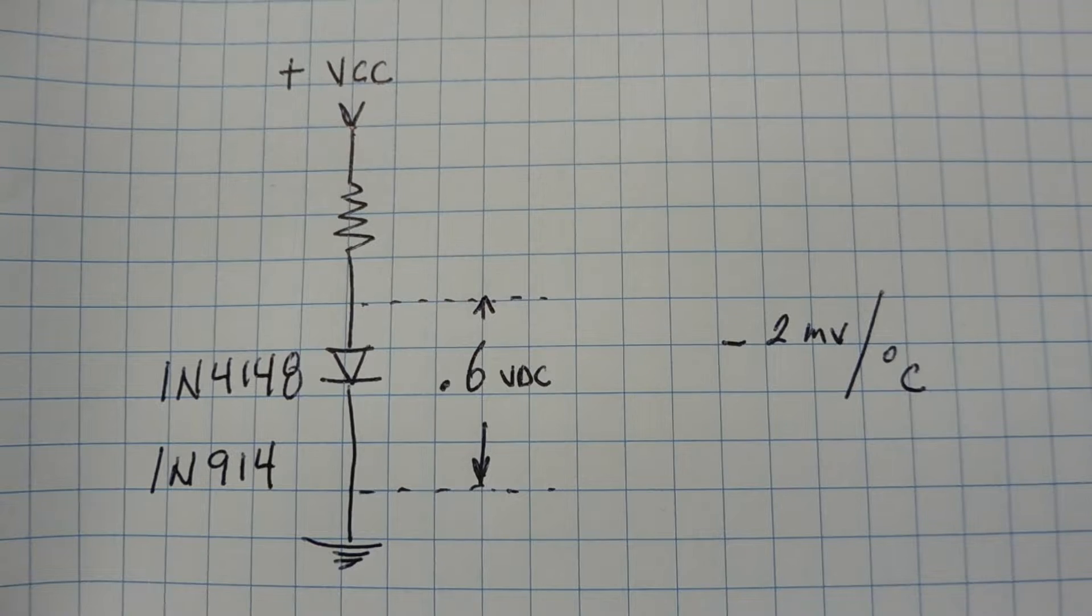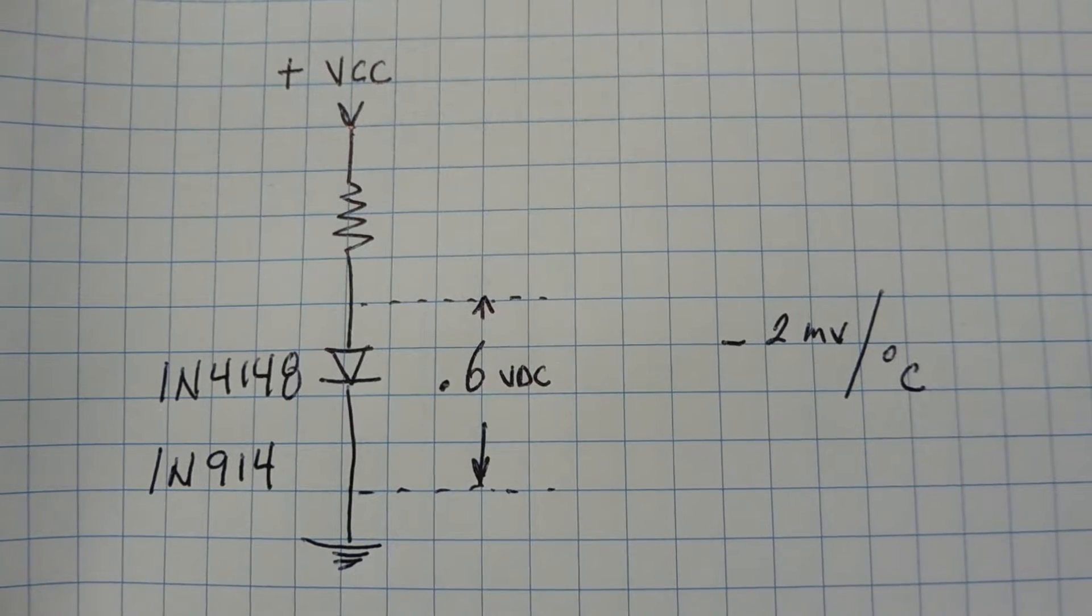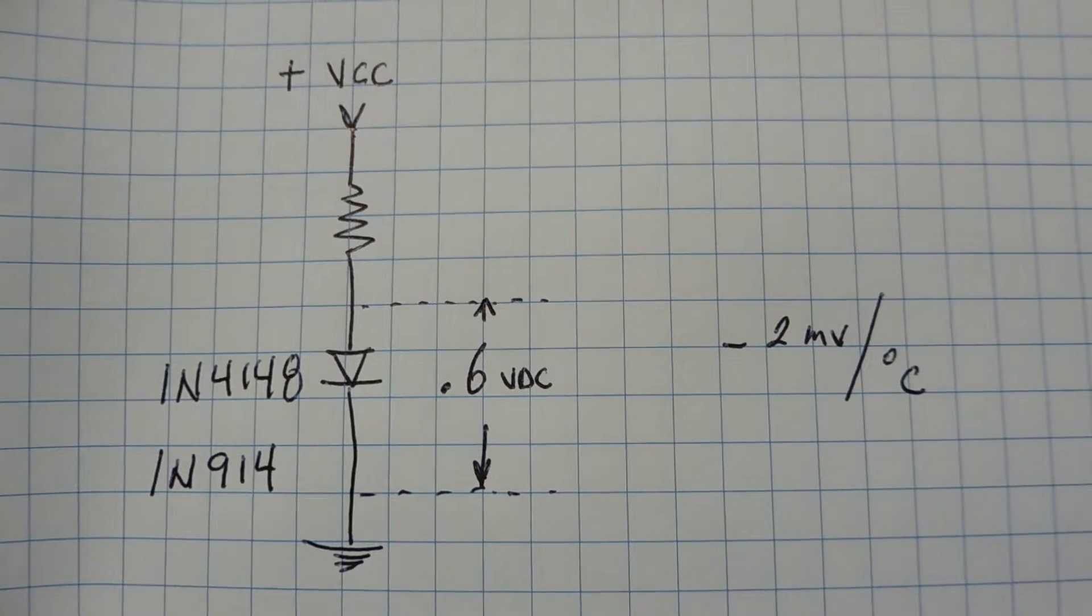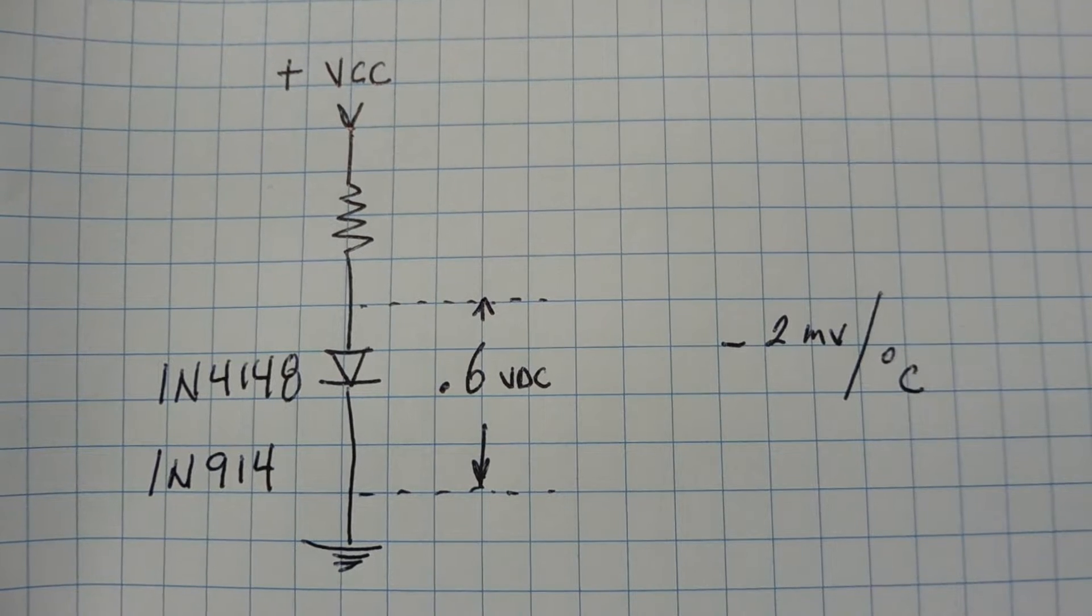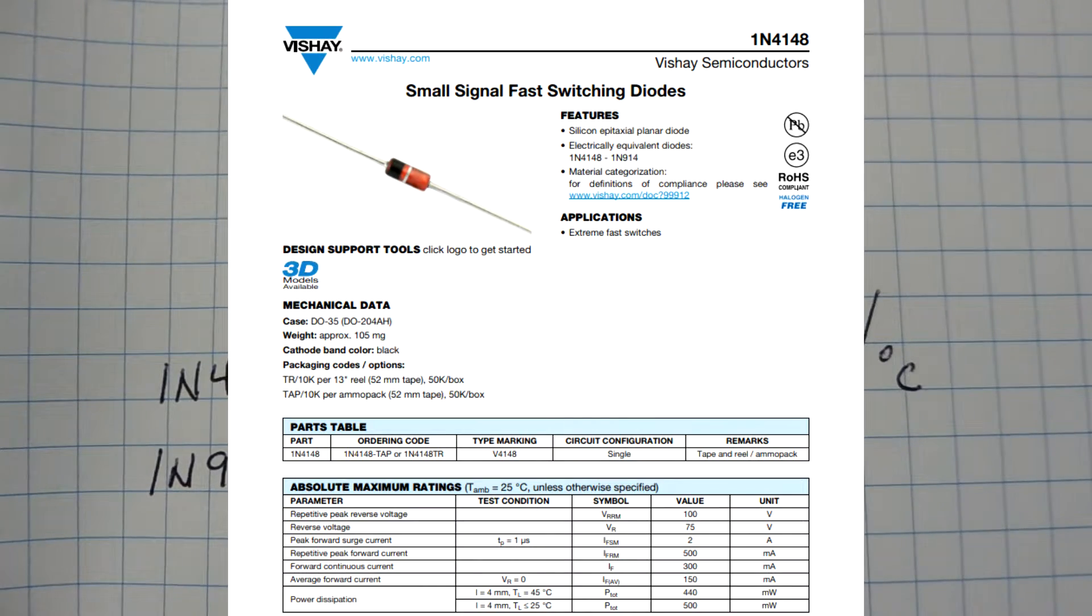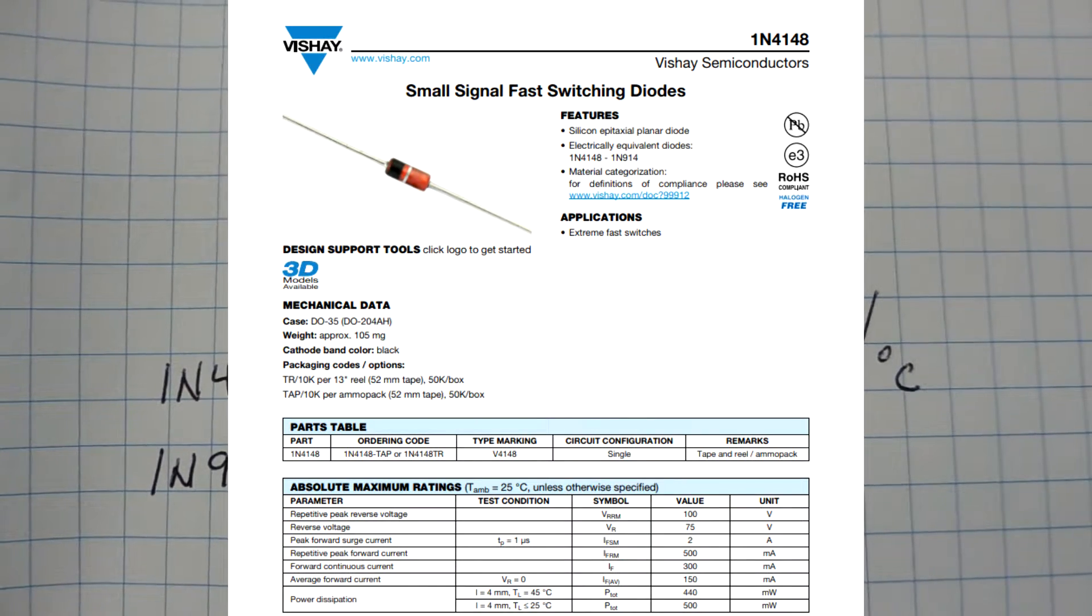The diodes that I used in my demo circuit are the 1N4148 or the 1N914, and these are sometimes called switching diodes or small signal diodes. These are very easy to obtain and very inexpensive.